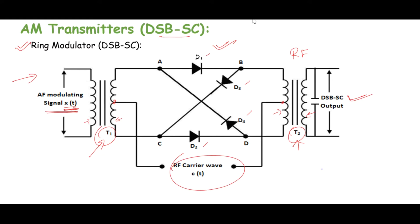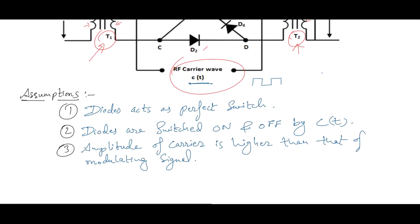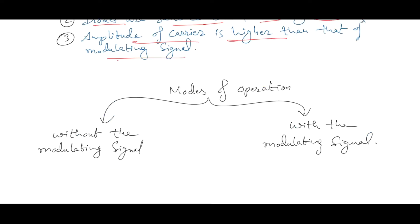Before starting our discussion further with working, let us make some assumptions. The first assumption is that carrier C(t) is a perfect square wave. Another is that diodes are acting as perfect switches with no losses, no barrier potentials, no forward resistances. The third is that diodes are switched on and off by carrier wave only. The last assumption is that amplitude of carrier is higher than the modulating signal amplitude.